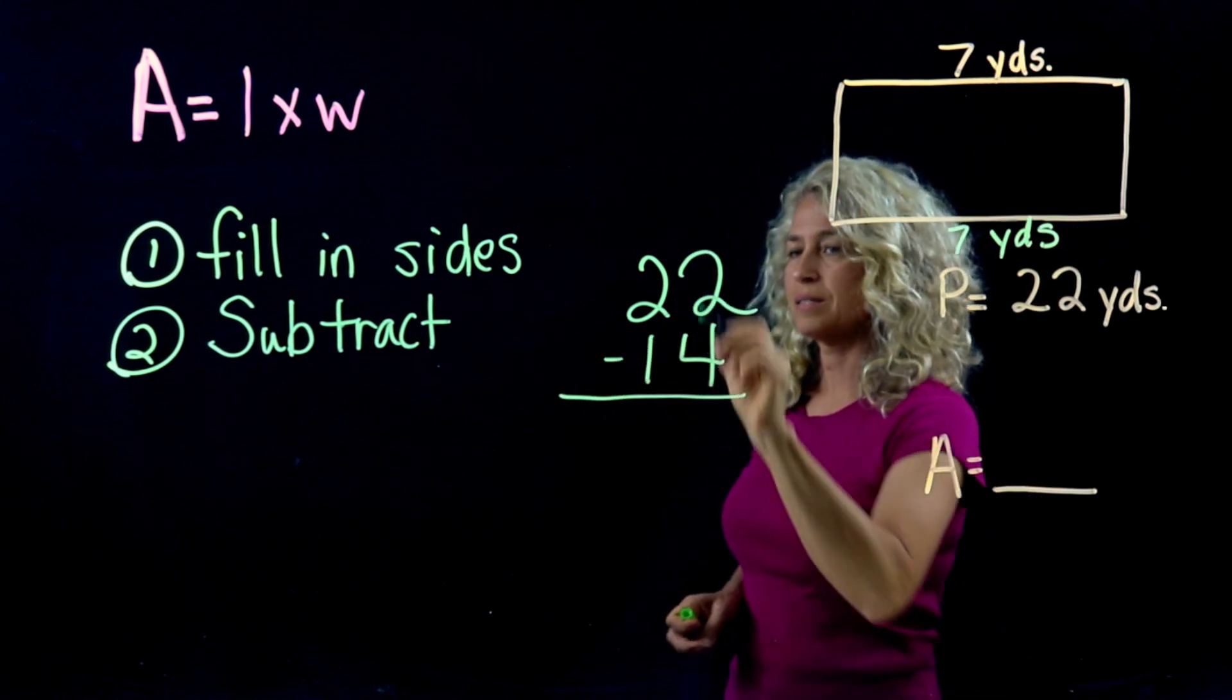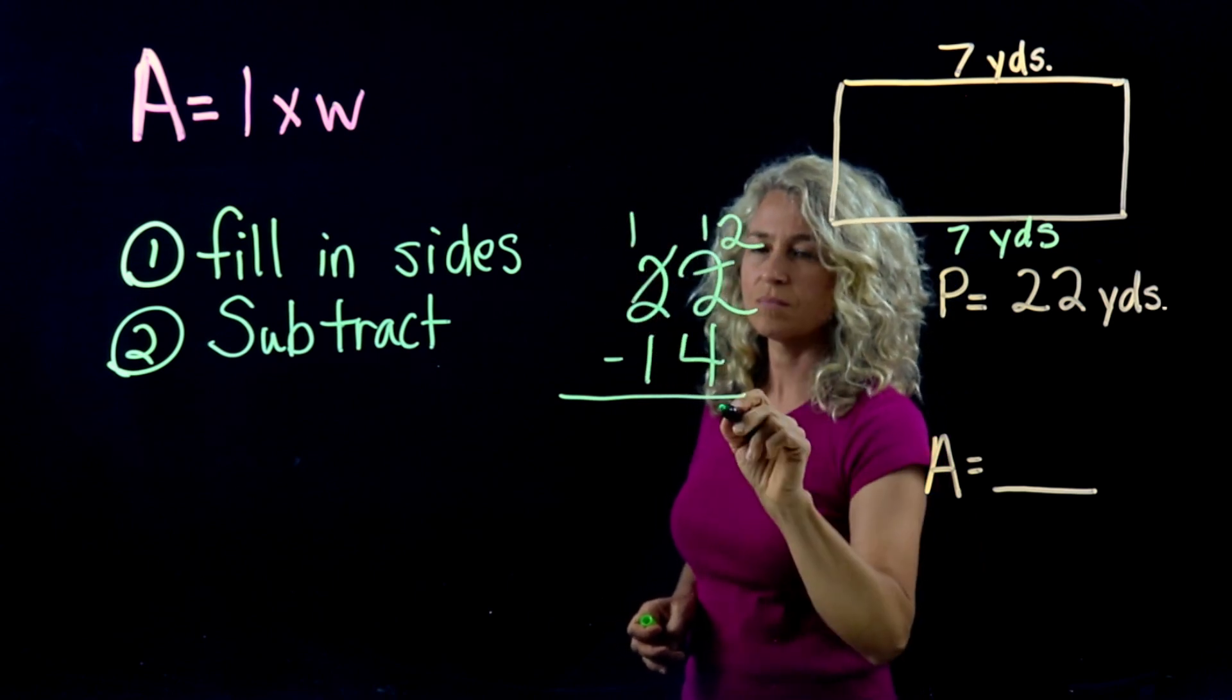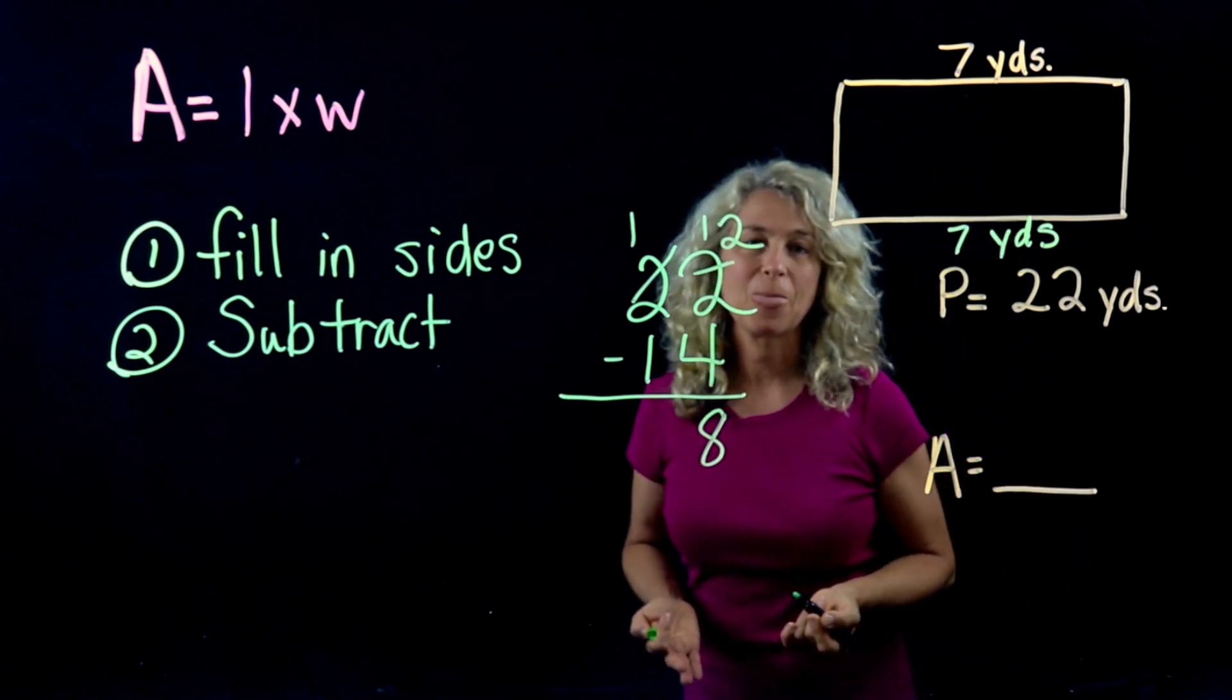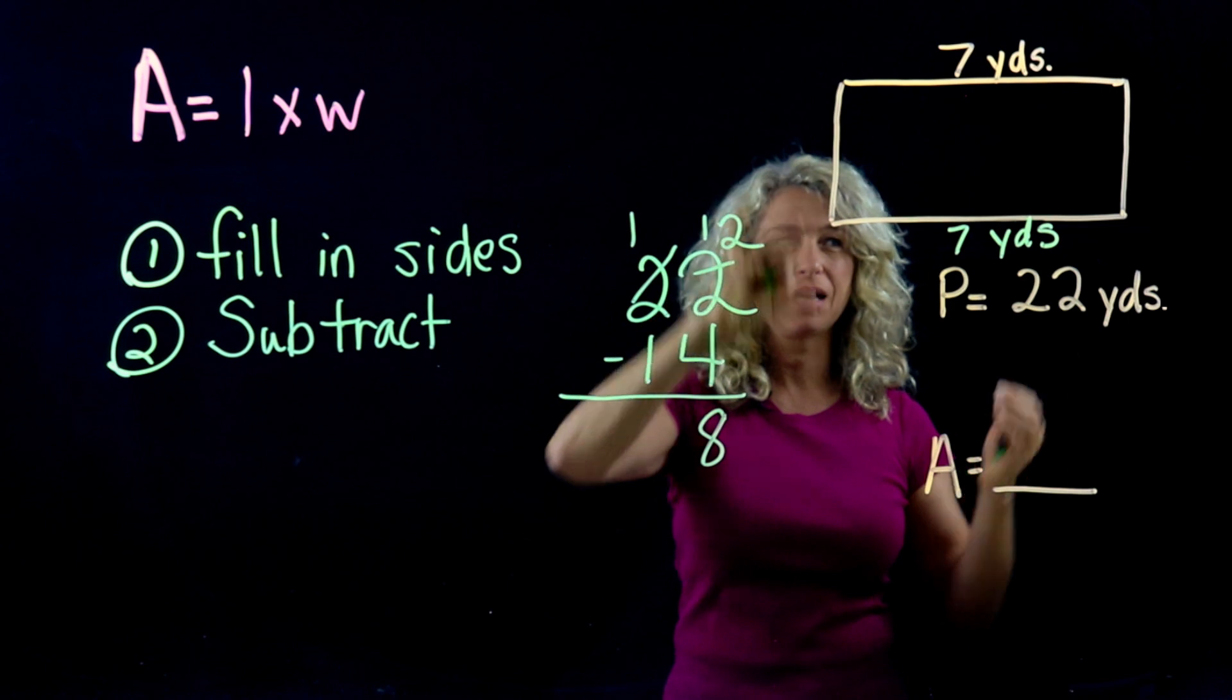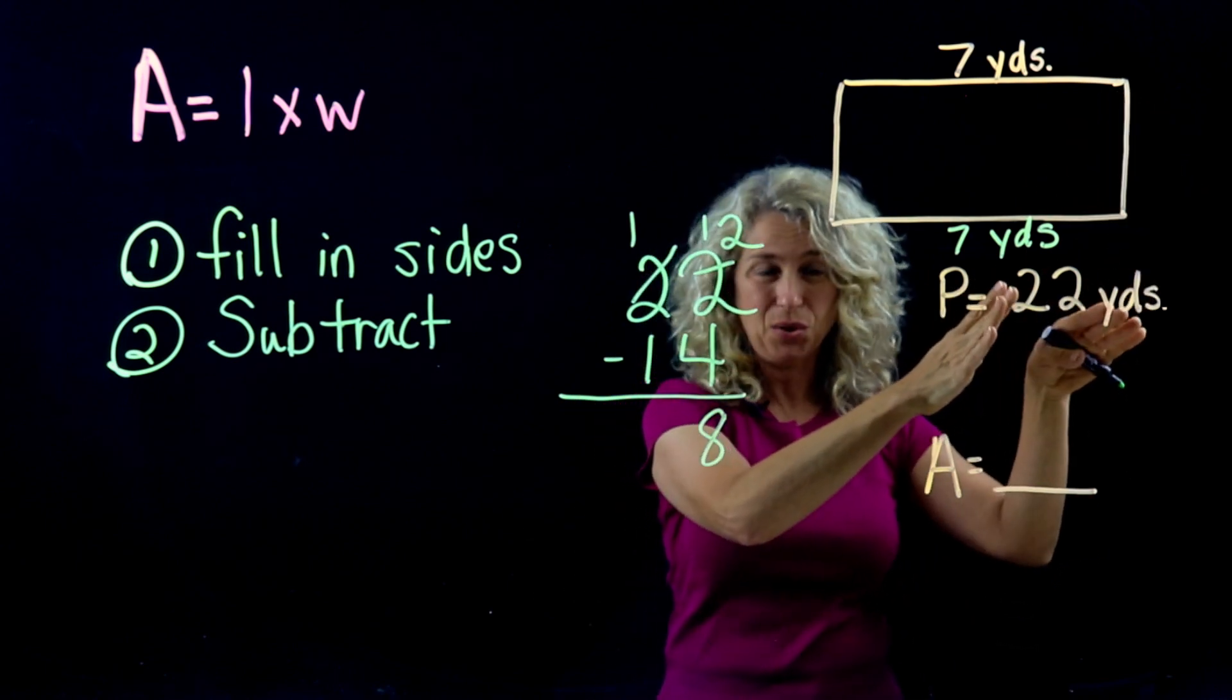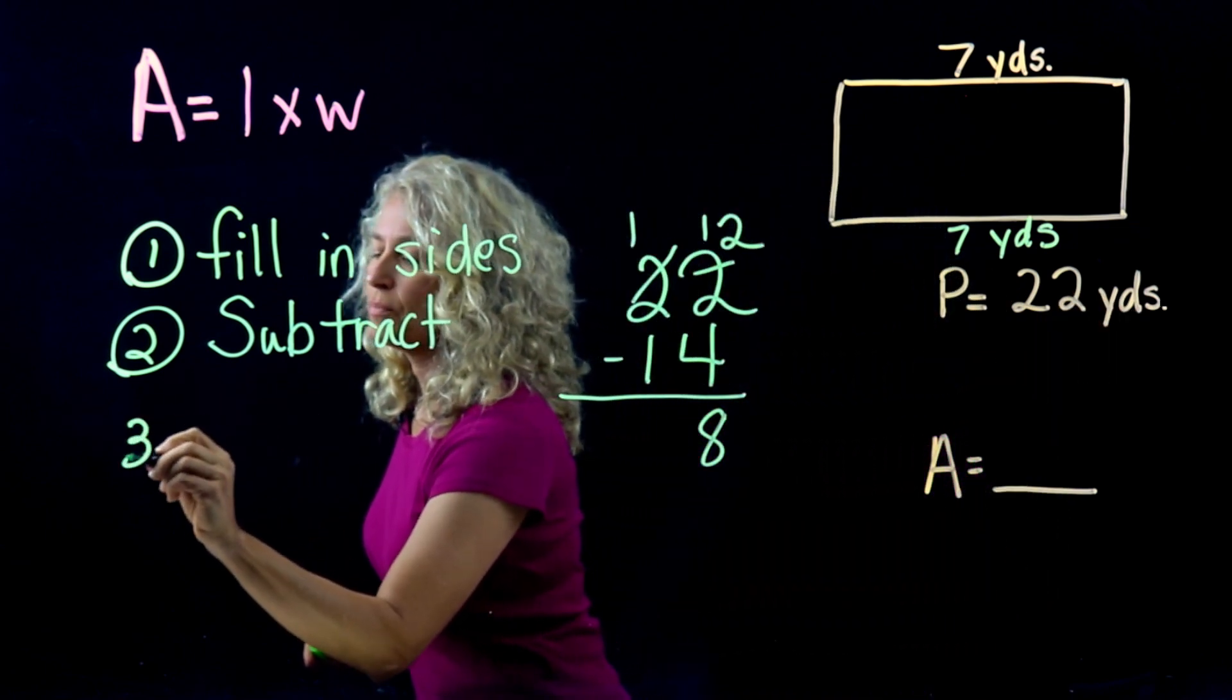So just do your regular subtraction and you get 8. Now if I were to fill in 8 here and 8 here, then my perimeter would not be 22. So that's why we have Step 3. Step 3 is divide by 2. So 8 divided by 2 equals 4.